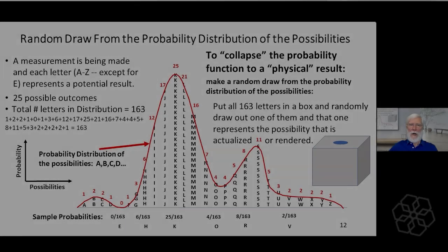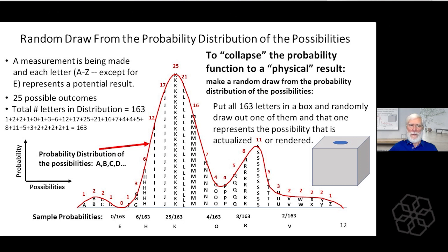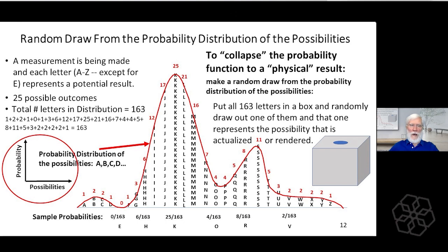This is the random draw from the probability distribution of the possibilities. Here we have 25 possible outcomes, each one has a letter of the alphabet — letters A to Z, 25 different possible outcomes. They are stacked up to show the probability, with probability in the upper direction. Probability goes up and possibilities go from A to Z horizontally. The red arrow marks the probability distribution of the possibilities.